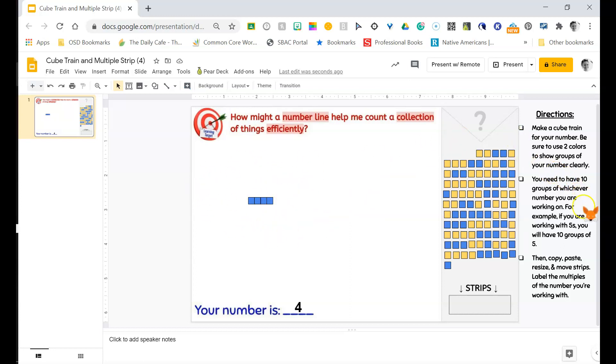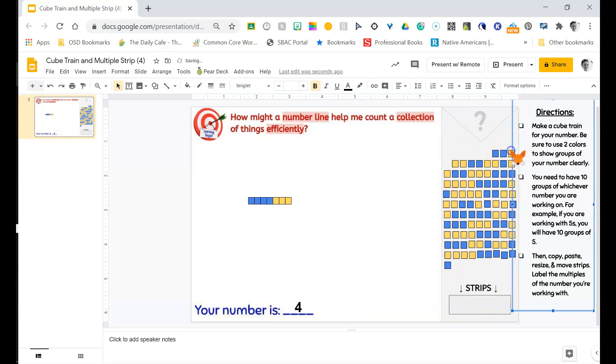Now I need to use a second color so that I can really clearly see my groups. So I'm going to make a second group of four. Two, three, and four. Okie dokie. So now I know how to make my trains of four.